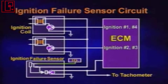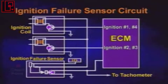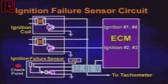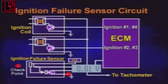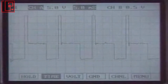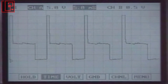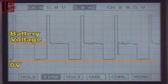There are four terminals: 12-volt output for the supply to the ignition coil, 12-volt power from the IG key, sensor signal for the ECM, and ground. To check the sensor, check the voltage and waveform at each terminal.